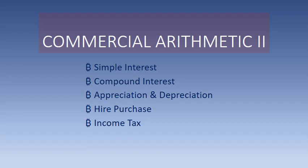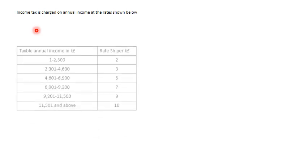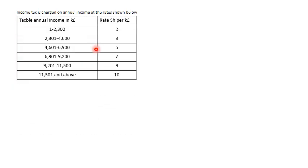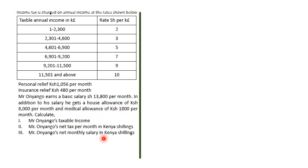Income tax is charged on annual income at the rates shown in this table. We're given some information: personal relief is 1056, insurance relief is 480. Mr. Onyango has a basic salary of 13,800 per month, a house allowance of 8,000, and a medical allowance of 1,800.